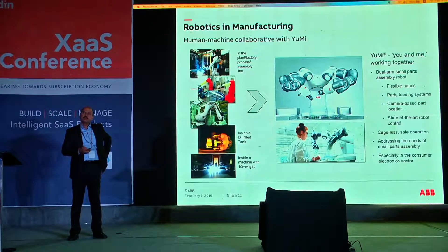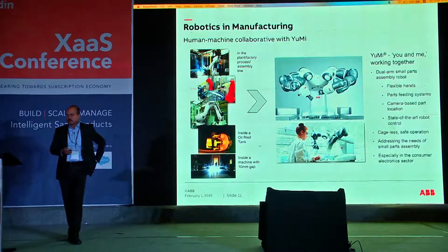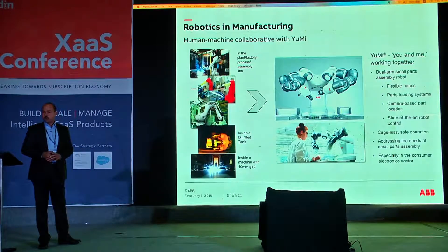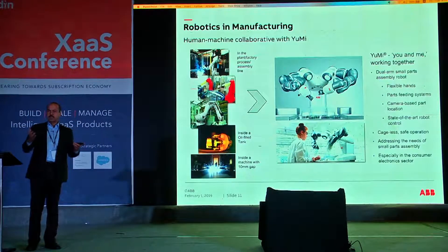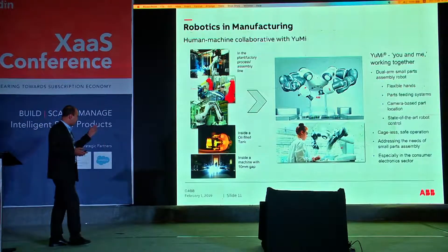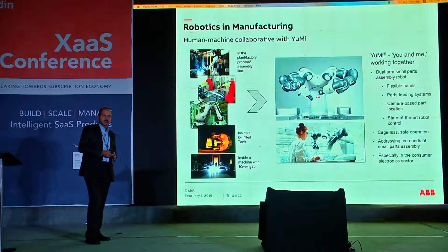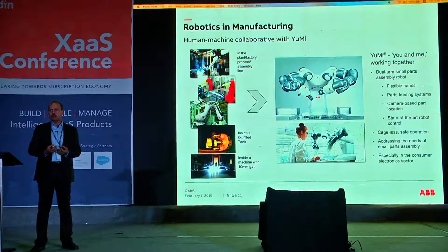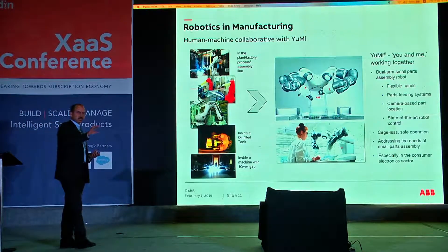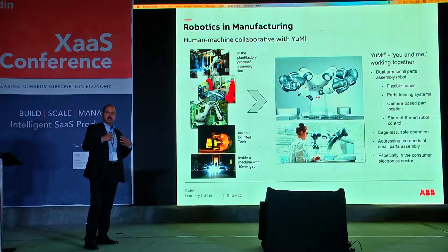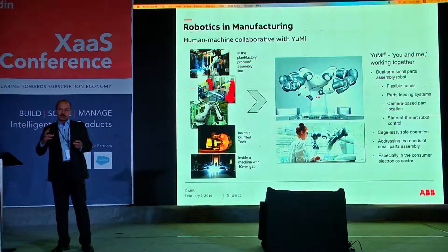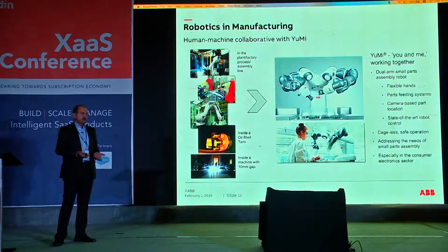On robots: as ABB, we have been making industrial robots since the 1960s. These robots are used in manufacturing — almost all automotive manufacturing uses them for painting and welding cars. We have also progressed to robots that handle difficult tasks, such as a robot that can crawl into a 10mm gap inside a large machine for remote inspection, and robots that can enter tanks in refineries without evacuating them to perform inspection.